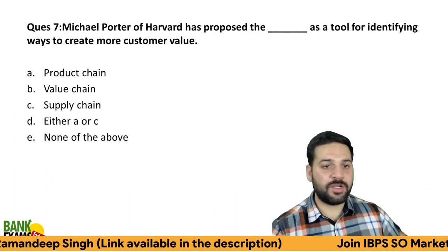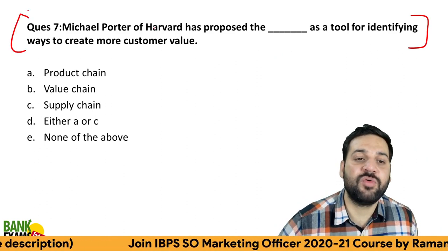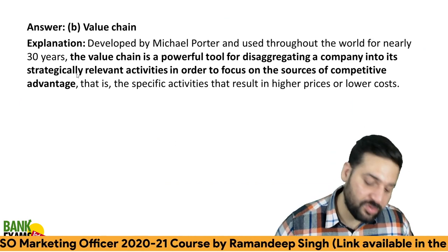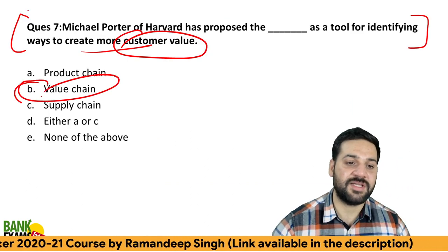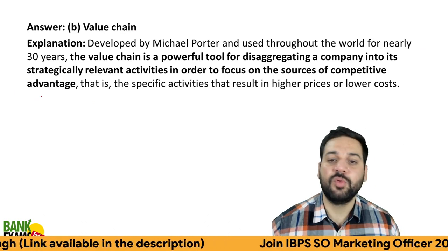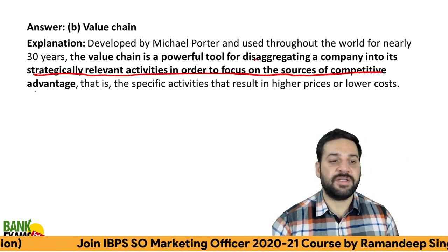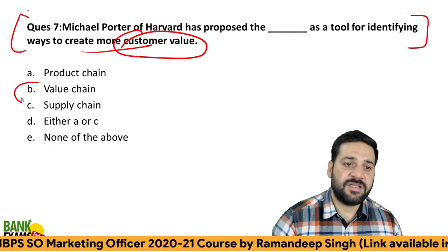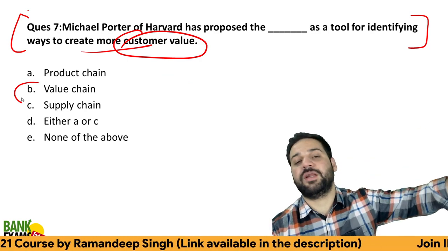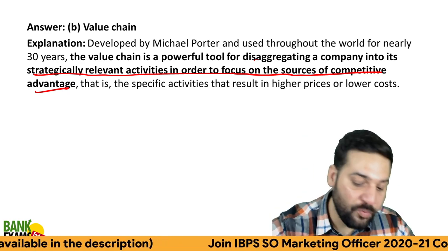Michael Porter of Harvard proposed a tool for identifying ways to create more customer value. As the name suggests — ways to create more customer value — it is value chain analysis. Developed by Michael Porter about 30 years ago, it is a powerful tool for disaggregating a company into strategically relevant activities that focus on sources of competitive advantage.